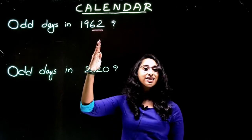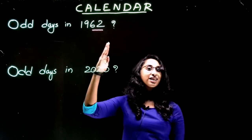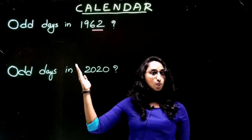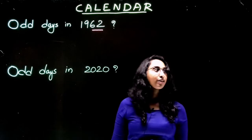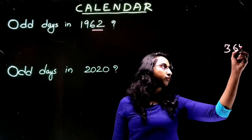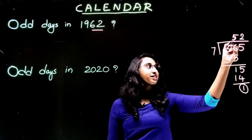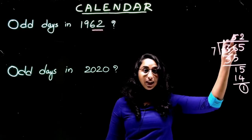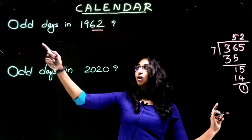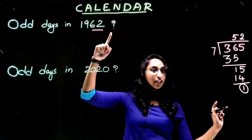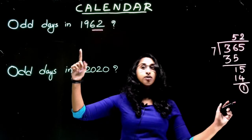In a non-leap year, there is 365 days. So what we have to do is divide that 365 with seven. One. So in 365 days there is complete 52 weeks plus one odd day. So the answer is: how many odd days in the year 1962? It is one. It is common for all non-leap years.